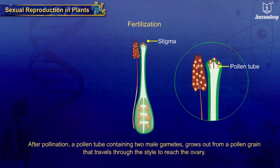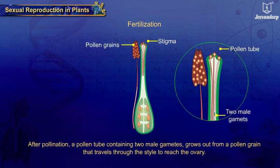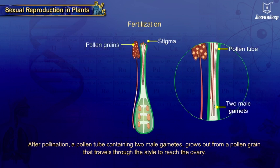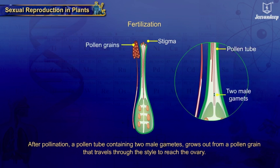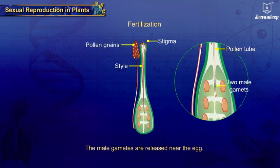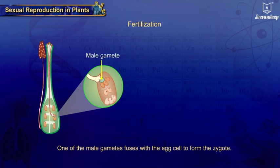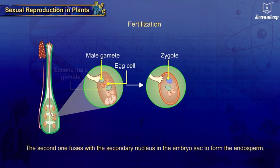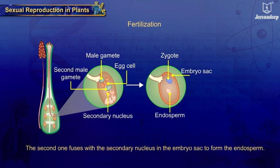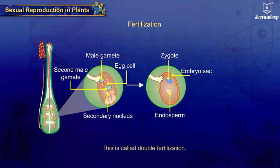A pollen tube containing two male gametes grows out from a pollen grain and travels through the style to reach the ovary. The male gametes are released near the egg. One of the male gametes fuses with the egg cell to form the zygote. The second one fuses with the secondary nucleus in the embryo sac to form the endosperm. This is called double fertilization.